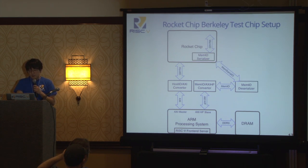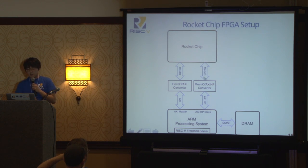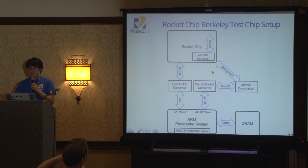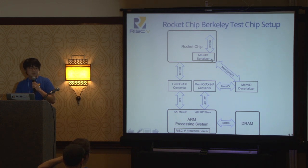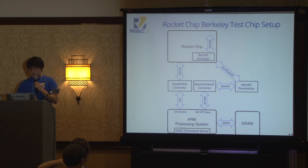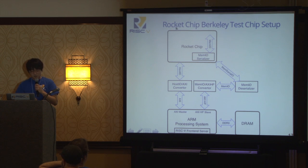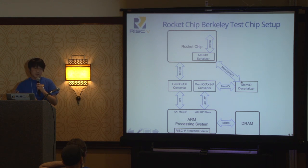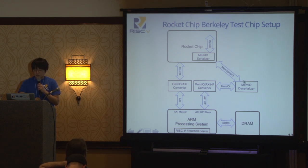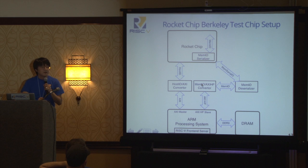For UC Berkeley's test chip setup, we can't have a 128-bit wide interface from the chip due to physical constraints. So we build a mem-IO serializer that serializes and slows the mem-IO interface to use single-ended IO pads coming out of the chip. In this case, the rocket chip is the actual silicon and everything else is hosted on the Zynq processor. We instantiate a deserializer on the Zynq side to recover the mem-IO interface, then leave everything else the same as the FPGA setup.